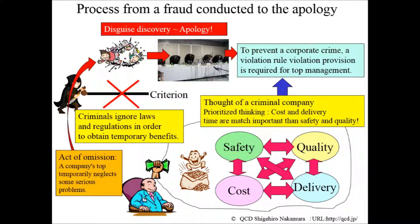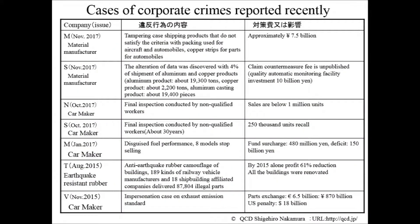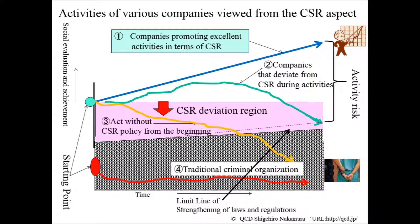To prevent corporate crime of this type, a violation rule and violation provision is required for top management. This table shows cases of corporate crimes reported recently. What you can see from each example is that even if a criminal act gains temporary benefits, that strategy makes no sense at all. To prevent corporate crimes of these types, a violation rule provision is required for top management.